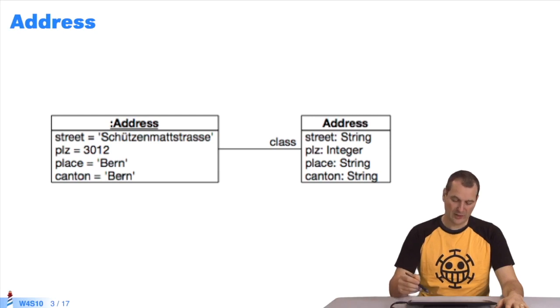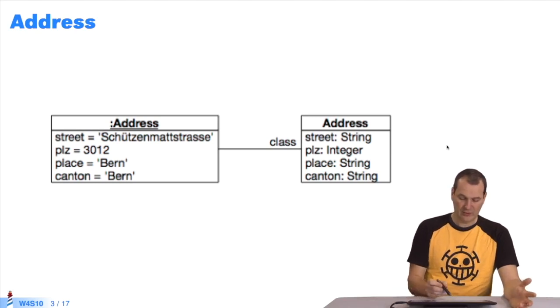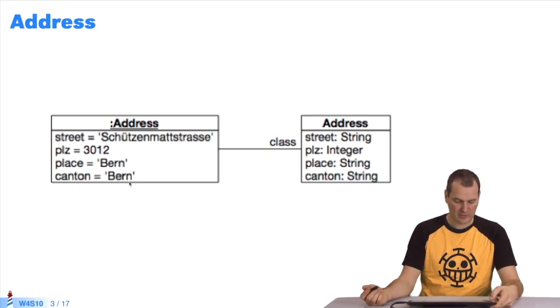We'll take the class Address as an example. These are Swiss addresses. An address is defined as a street, a place, a postal code and a canton. I have an instance which describes a particular street. So far, this is just standard programming.